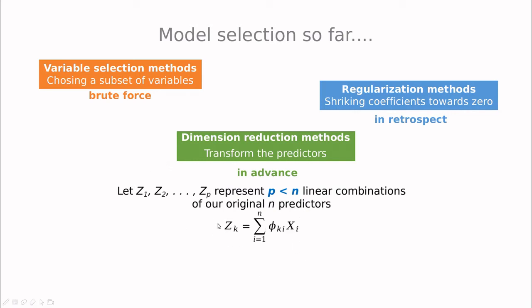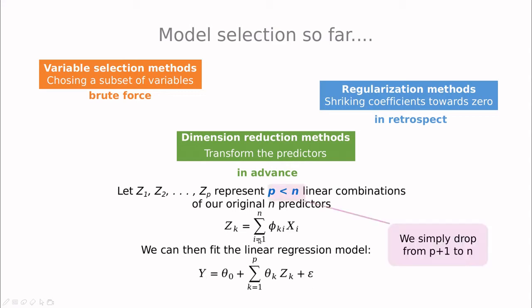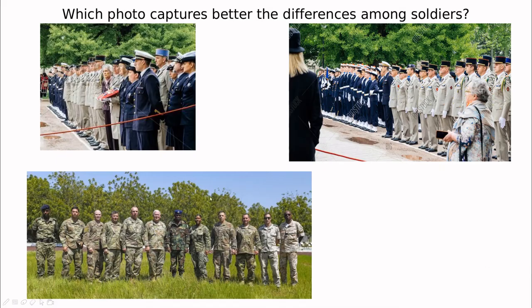The idea is that those predictors are linear combinations of the old ones, and instead of using a regression between the output and the original variables, we're doing a regression between the output and these new variables. Instead of using n predictors we're going to use just p, and we're going to drop from p plus 1 to n. Let me show you this graphically.